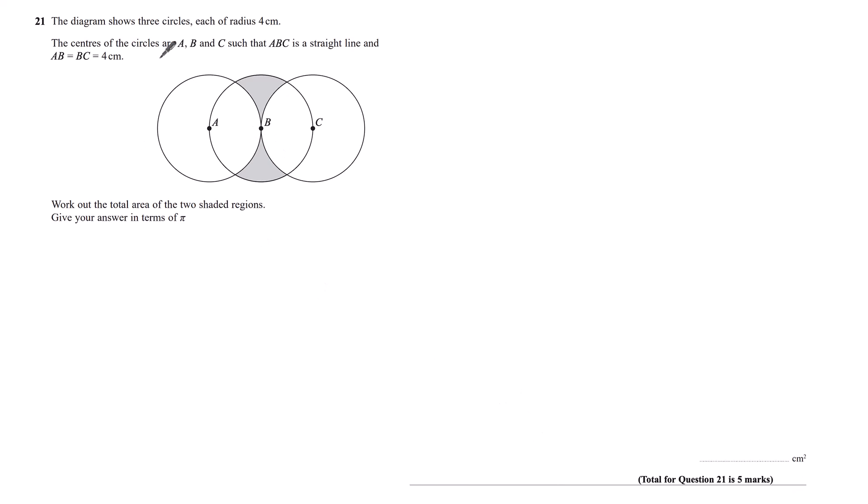Question 21. The diagram shows three circles, each of radius four centimeters. The centers of the circles are A, B and C, such that A, B, C is a straight line, and AB equals BC equals four centimeters. Work out the total area of the two shaded regions. Give your answer in terms of pi.